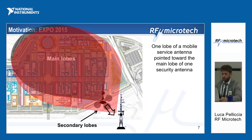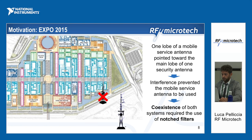You can see an example of this government antenna — the main lobe of this antenna and secondary lobes of the mobile service providers' antennas. In particular, one lobe of a mobile service antenna pointed toward the main lobe of one security antenna. For this reason, there was interference in the government antenna, and so the interference prevented the security antenna from being used properly.